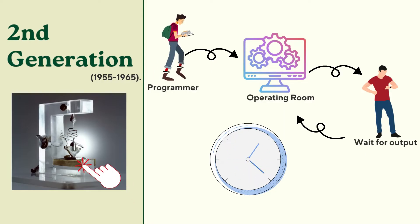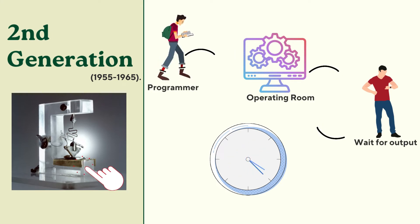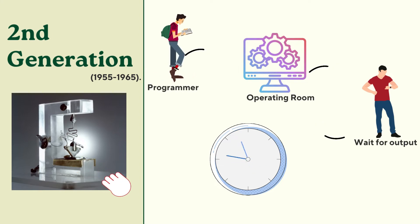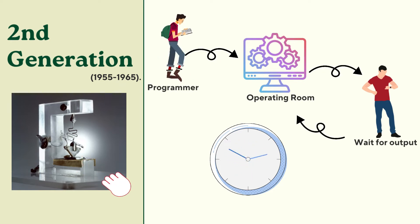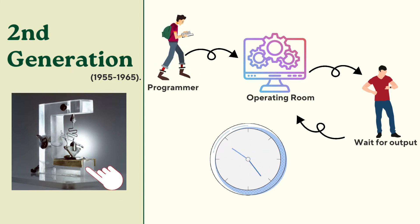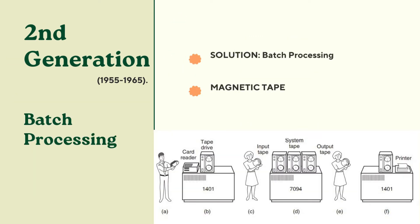Then comes the second generation with the invention of transistors — you can see the picture I've placed on the left-hand side. This was a very big advancement in the tech world. To run a program, the programmer would first write the program on paper in FORTRAN, then punch it onto cards, bring the card deck to the input room, hand it to an operator, and wait for the output. This process was very time consuming, which was a major disadvantage.